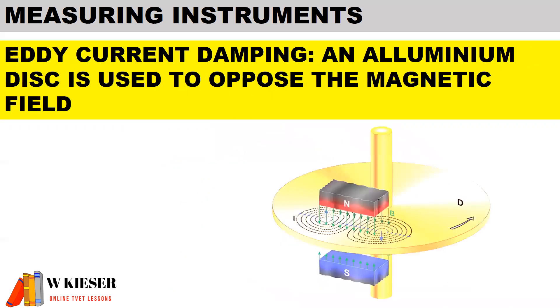Another form of damping is eddy current damping, also known as electromagnetic damping. Here an aluminium disc is used to oppose the magnetic field.